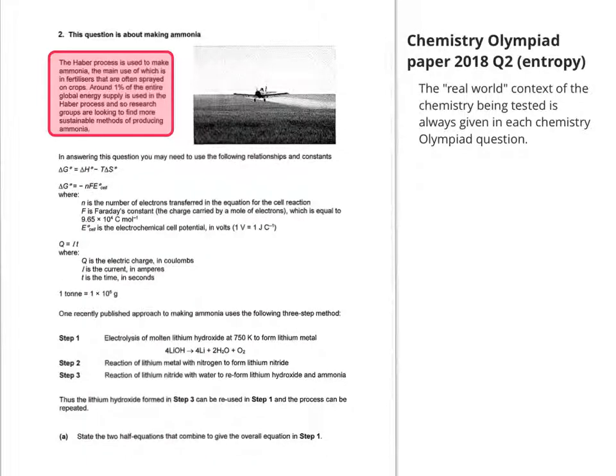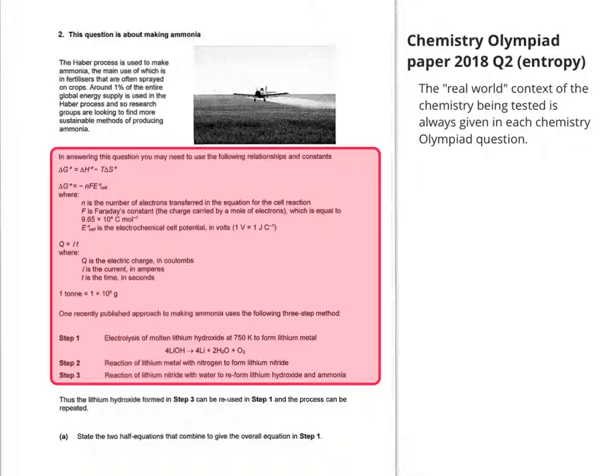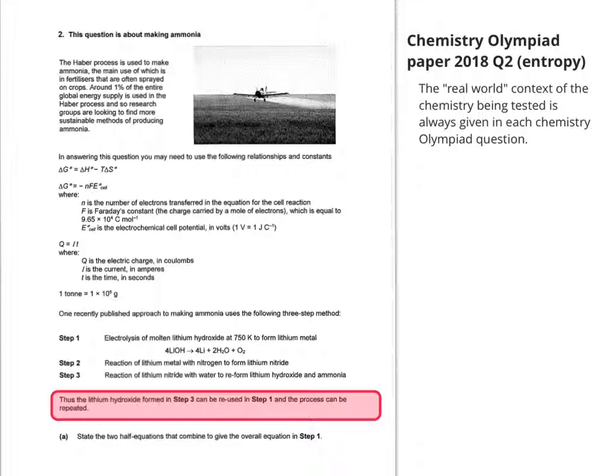So moving down the page, there's quite a lot of information that's actually been given. So I'll be using parts of this as I go through the question. And it's interesting at the bottom it says the lithium hydroxide formed in step 3 can be reused in step 1 and the process can be repeated. This shows how this particular process might be more sustainable.